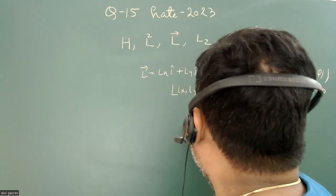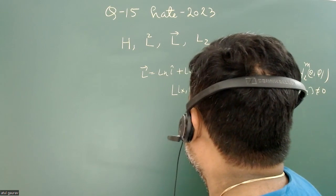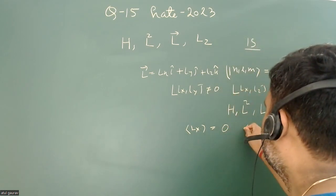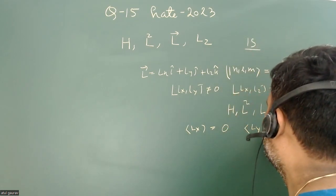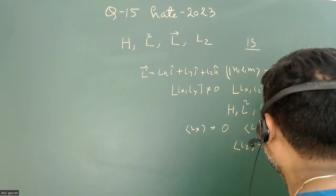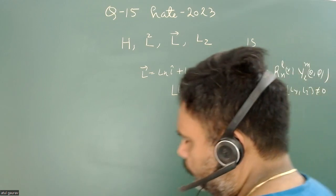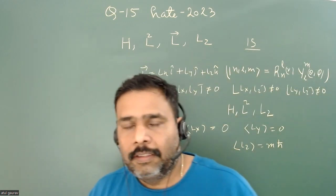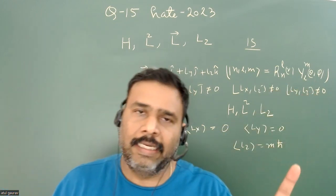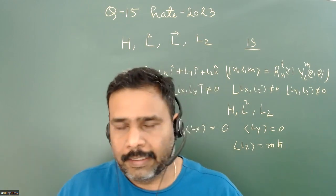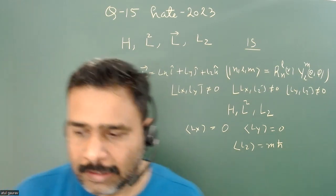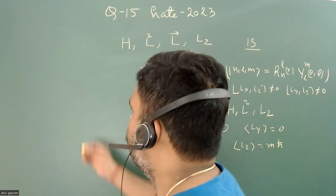We also have all the information about expectation values: the expectation value of Lx on state ψ_nlm is equal to 0, the expectation value of Ly on ψ_nlm is equal to 0, and the expectation value of Lz on ψ_nlm is equal to mħ. So for a general |nlm⟩ value, the Lx, Ly, and Lz operators are entirely different from each other.